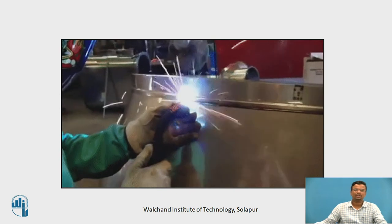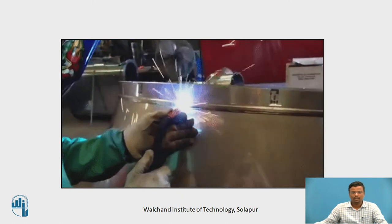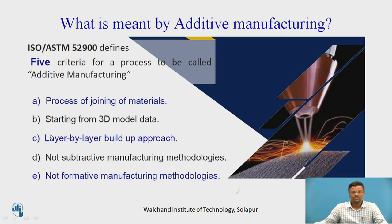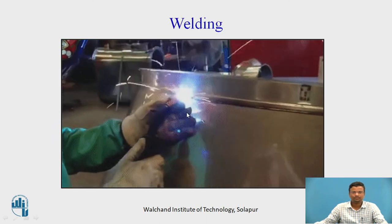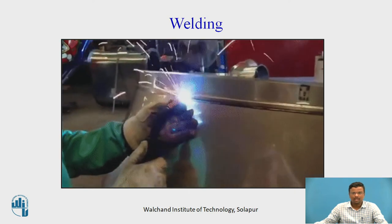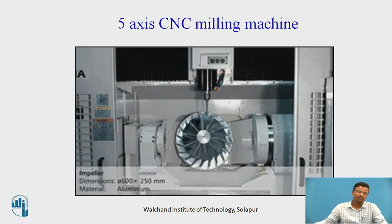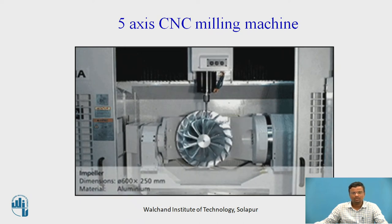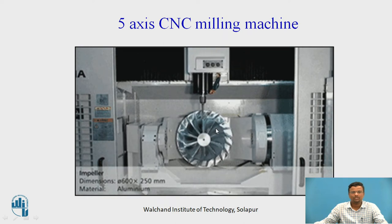There are different types of processes that may look like additive manufacturing but are not, because they do not satisfy the five conditions we have discussed. For example, in the welding process, we are not providing any 3D CAD model data, and there is also some metal removal involved. For the 5-axis CNC milling machine, we do provide CAD model data as input, but this is a subtractive process, so the 5-axis CNC milling machine is not an additive manufacturing machine tool.